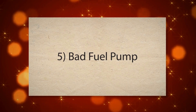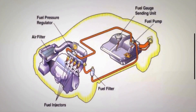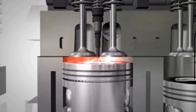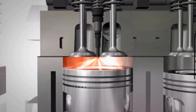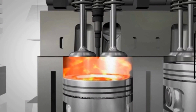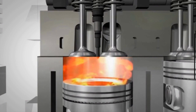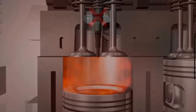The fifth cause is a bad fuel pump. A bad fuel pump may not deliver adequate fuel pressure to the injectors. This leads to a lean air-fuel mixture in Cylinder 2. A lean air-fuel mixture may lead to a misfire in Cylinder 2, triggering the PO302 code.